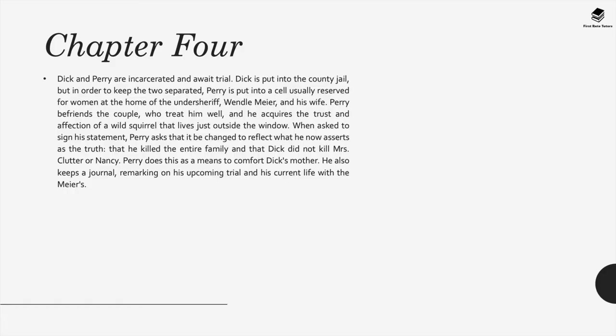Chapter 4: Dick and Perry are incarcerated and await trial. Dick is put into county jail, but in order to keep the two separated, Perry is put into a cell usually reserved for women at the home of undersheriff Wendell Mayer and his wife. Perry befriends the couple who treat him well, and he acquires the trust and affection of a wild squirrel that lives just outside the window. When asked to sign his statement, Perry asks that it be changed to reflect that he killed the entire family and that Dick did not kill Mrs. Clutter or Nancy — Perry does this as a means to comfort Dick's mother.